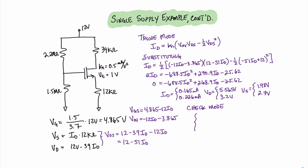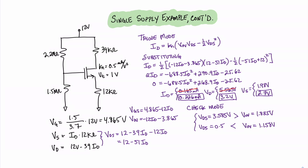Now we need to check our mode. For the smaller current of 0.165 milliamps, VDS equals 3.858 volts. For the larger current, VDS equals 0.5 volts. We can also solve for the overvoltage: for the smaller current, VOV equals 1.885 volts; for the larger current, VOV equals 1.158 volts. Comparing these, for the smaller current VDS is larger than VOV — meaning saturation mode. For the larger current of 0.226 milliamps, VDS is smaller than VOV — meaning triode. Since we already determined we're not in saturation mode, it must be that 0.226 milliamps is the correct current. Therefore, VD equals 3.2 volts and VS equals 2.7 volts are the correct values.